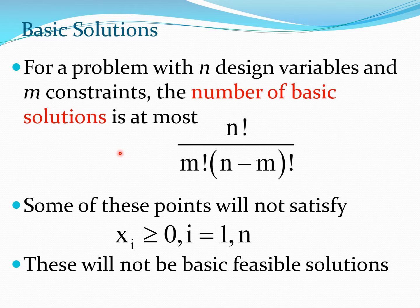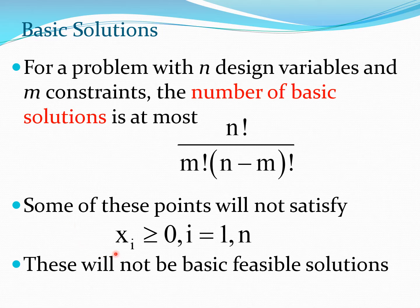For a typical problem with N design variables and m constraints, the number of basic solutions is at most N factorial divided by (M factorial times (N minus M) factorial). Some of these points will not satisfy XI greater than or equal to 0, meaning some will be negative. Those negative points are not basic feasible solutions and are discarded as infeasible solutions.